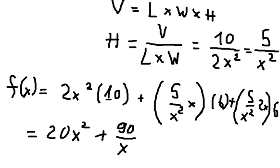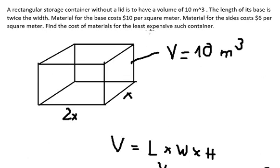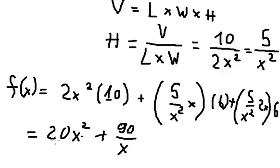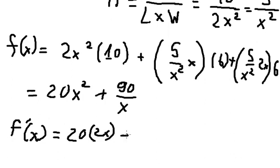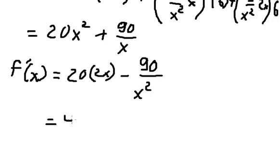Because we want to find the least expensive, so we need to find the critical value of f of x. So if we do the first derivative of this one, we have 40x plus negative 90 over x squared. This gives us 40x minus 90 over x squared.